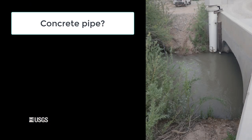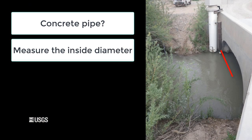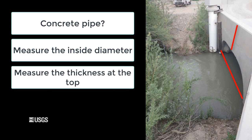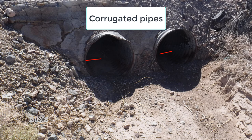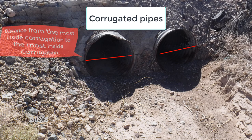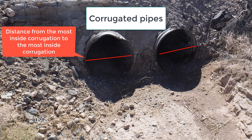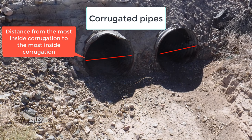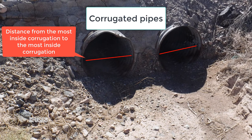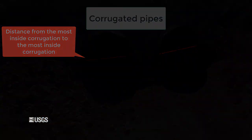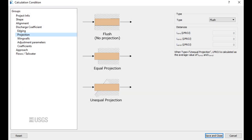For concrete pipes, I will measure the inside diameter and the thickness at the top if I end up surveying the top rather than the bottom. For corrugated pipes, the inside diameter should be measured. This is the distance from the most inside portion of the corrugation on one side to the other side, i.e. the minimum inside diameter.